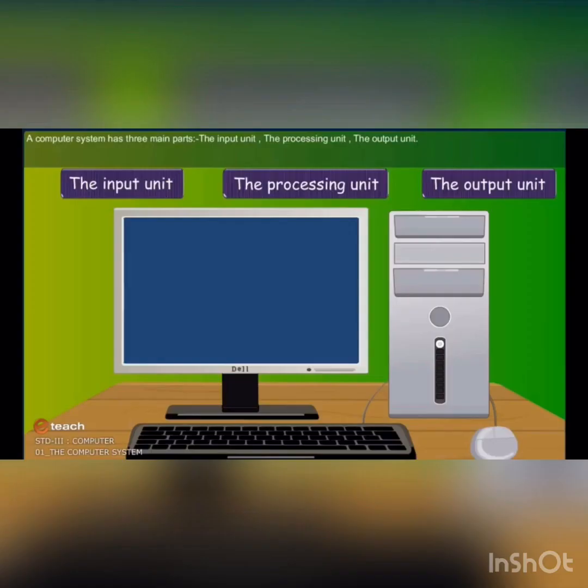A computer system has three main parts again: the input unit, the processing unit, and the output unit.